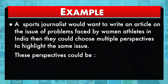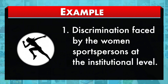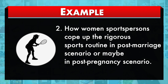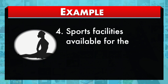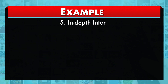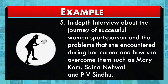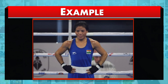For example, a sports journalist who wants to write an article on the problems faced by women athletes in India could choose multiple perspectives to highlight the same issue. These perspectives could include: discrimination faced by women sports persons at the institutional level; how women sports persons cope with a rigorous sports routine in a post-marriage or post-pregnancy scenario; a comparative analysis of sports funding available for male sports persons vis-à-vis women players; sports facilities available for women sports persons; and an in-depth interview about the journey of a successful women sports person — such as Mary Kom, Saina Nehwal and P.V. Sindhu — and the problems she encountered during her career and how she overcame them.